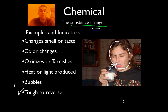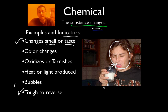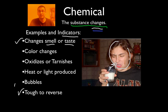Here we have a person smelling sour milk. If something changes its smell or taste, that's a huge indicator that a chemical change has occurred. It's not normal milk anymore — it's spoiled milk. There are extra compounds and molecules in there that don't taste good to us and aren't good for us.